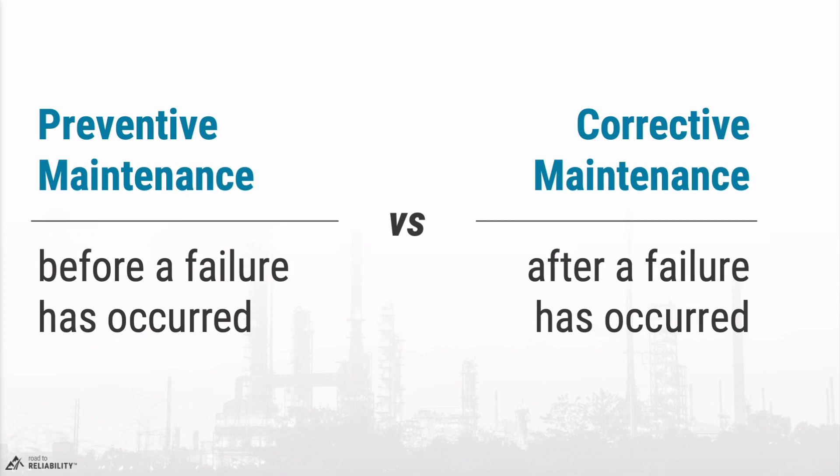When we do preventive maintenance, we're doing a task before a failure has occurred. That task can be aimed at preventing a failure, minimizing the consequence of the failure, or assessing the risk of the failure occurring. When we're conducting a corrective maintenance task, the failure has now occurred and we're reinstating the equipment's functionality. Corrective maintenance can also be the result of a deliberate run-to-failure strategy — something you choose to go for.